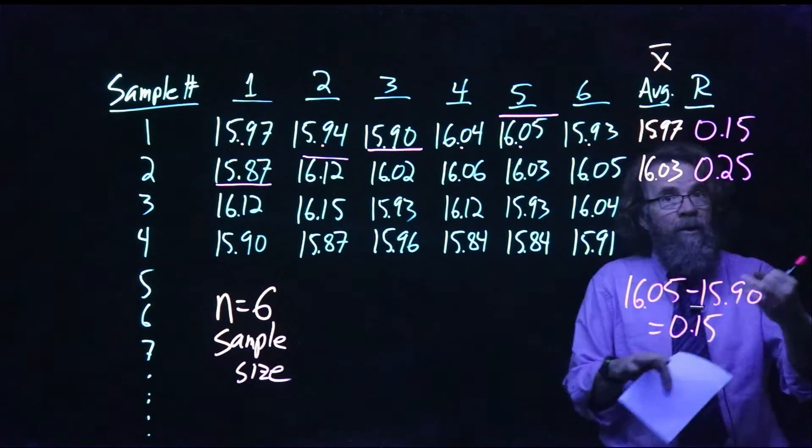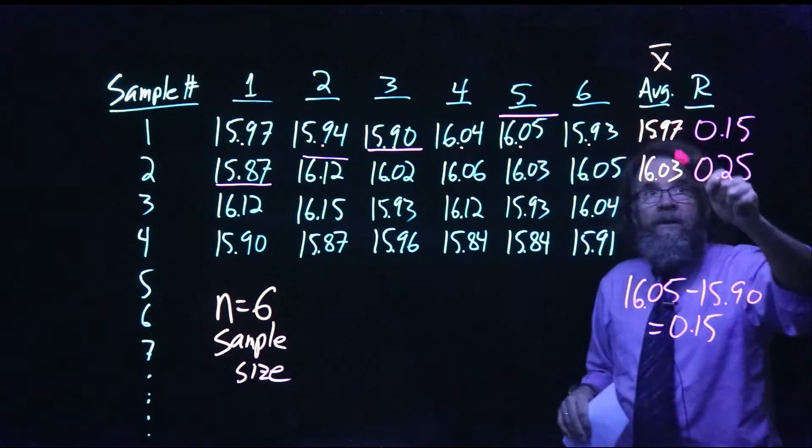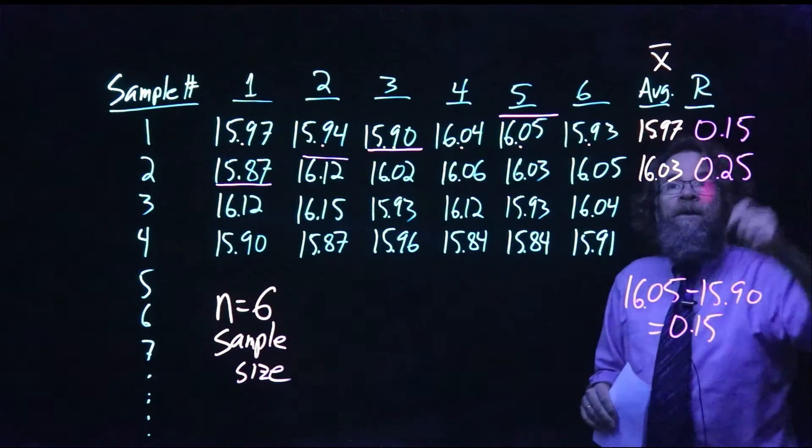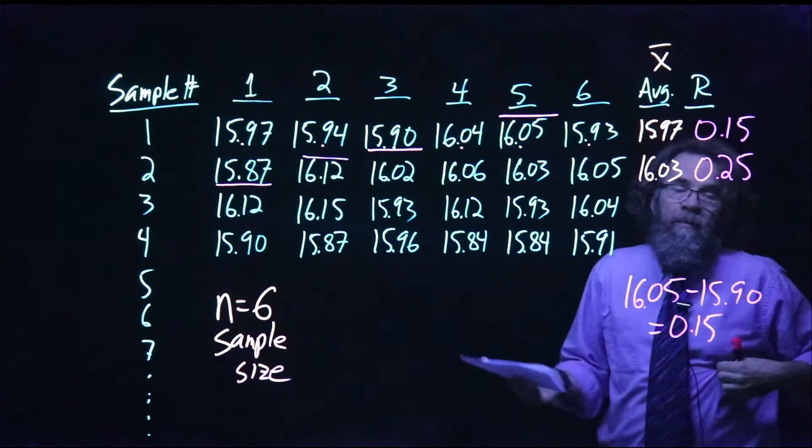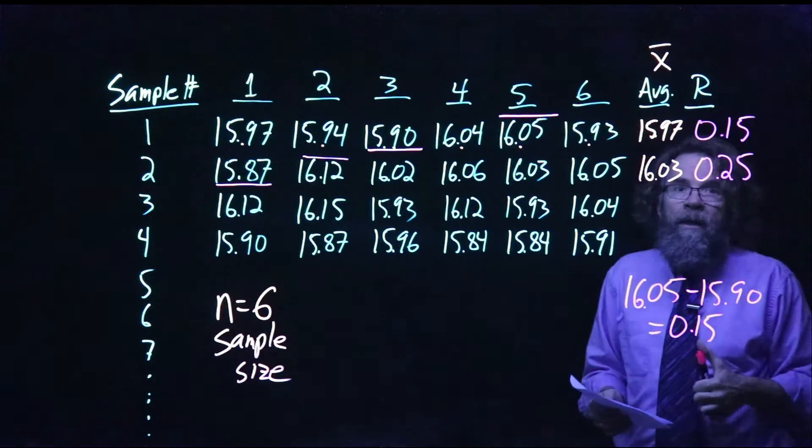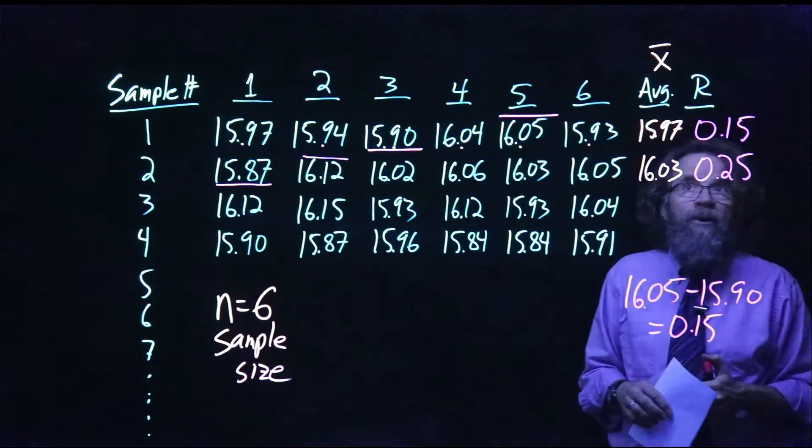So for control charts—for X-bar charts and R charts—we need to calculate the average every time and we need to calculate the range every time. And they're very simple to do, and they allow us to create two different charts.